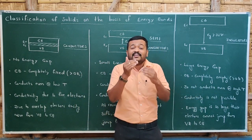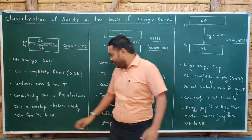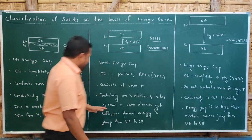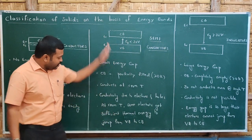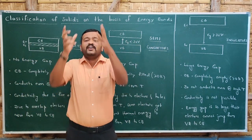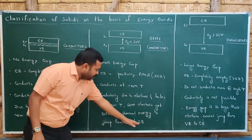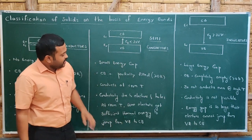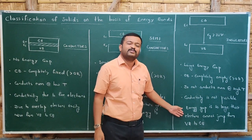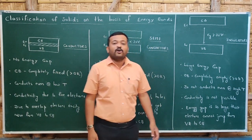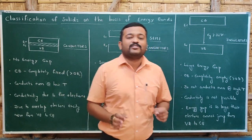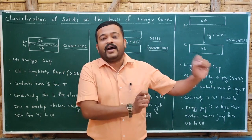Finally, regarding how easily electrons can move from one band to another: due to overlap in conductors, electrons easily move from the valence band to the conduction band. In semiconductors, at room temperature, some electrons get sufficient thermal energy and jump to the conduction band. In insulators, the energy gap is too large and electrons cannot jump from the valence band to the conduction band. This is how we classified solids based upon band theory.